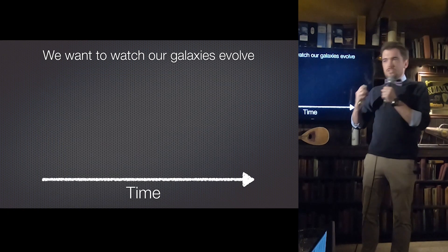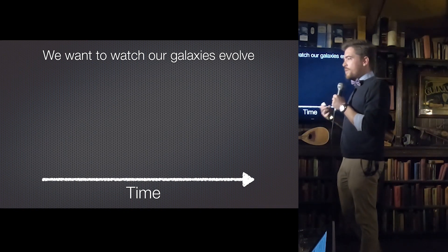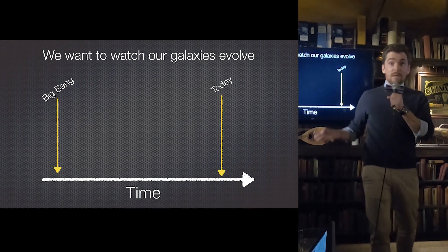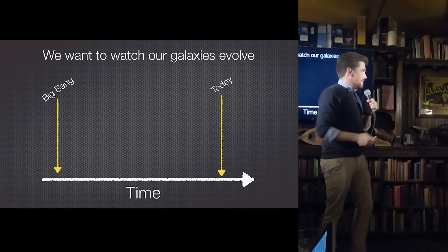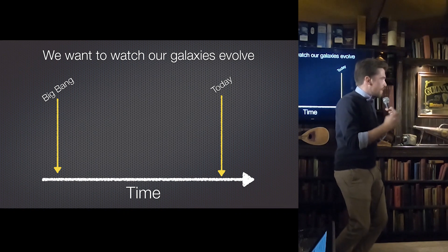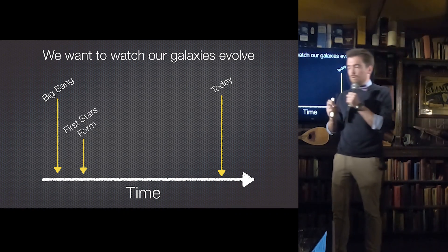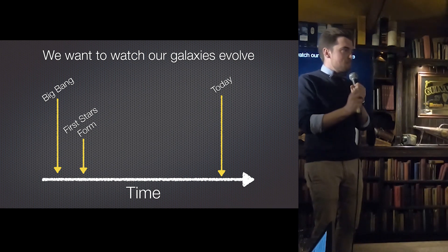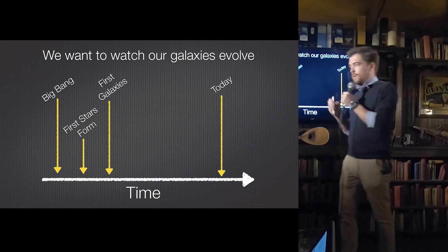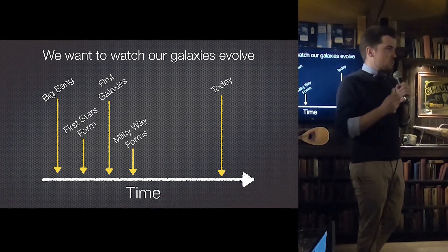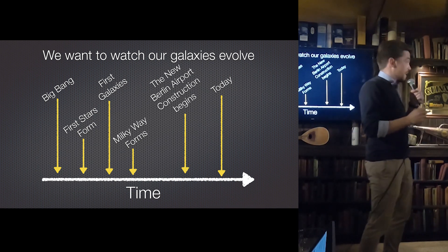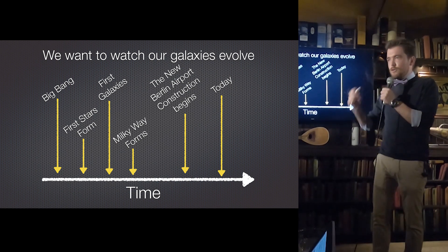Now, as astronomers, we want to do the same thing, but with galaxies. So, what we do is we take a universe, we take the universe that starts at the Big Bang and goes through to today. And now we're looking at the growth of galaxies on very, very long time scales. Everything that we're talking about here takes a very, very long time to occur. So, very near to the Big Bang, the first stars begin to form. A long time after that, the first galaxies begin to form. The Milky Way forms shortly after that. And we're talking cosmological time scales. So, naturally, in the middle here is where we put the beginning of the construction of the new Berlin airport.